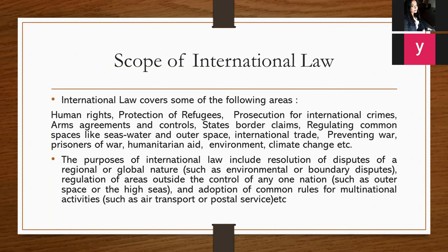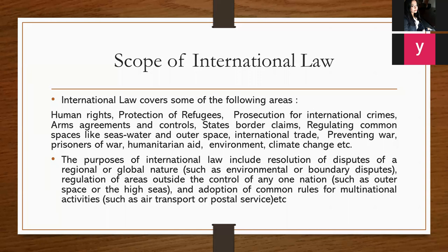China also has a border dispute with India on the eastern side. Then, regulating common spaces like seas, water, and outer space. Airspace is governed by international law — any aircraft or air carrier cannot fly through another country's skies without permission. Because of international law, permission has to be sought, and if they trespass and fly over that region, the military of that nation would circumvent their routes and try to stop, prevent, or even arrest them.